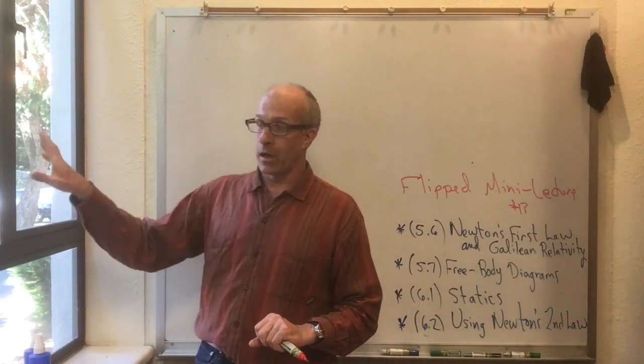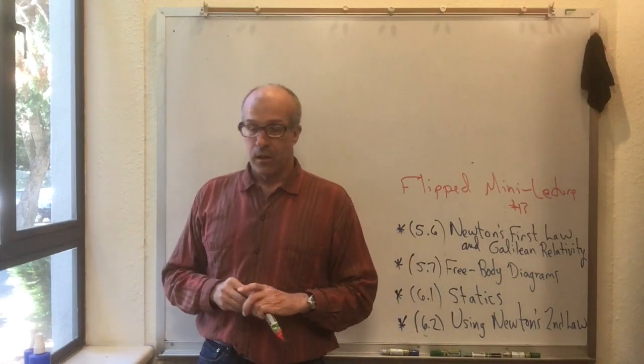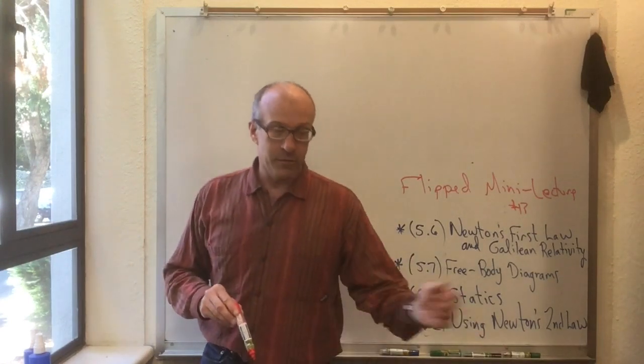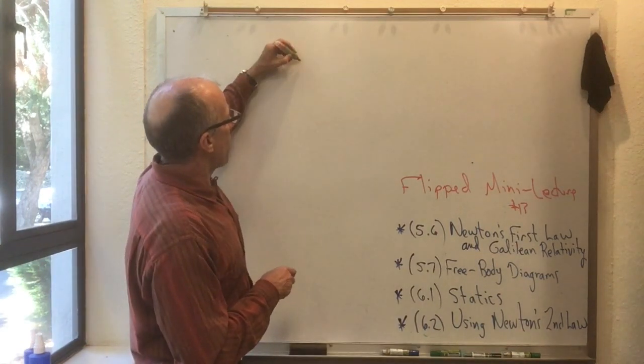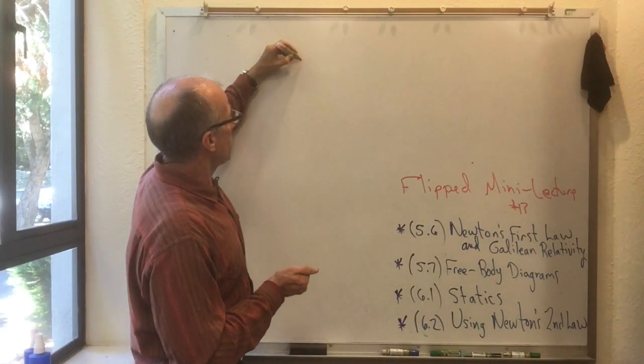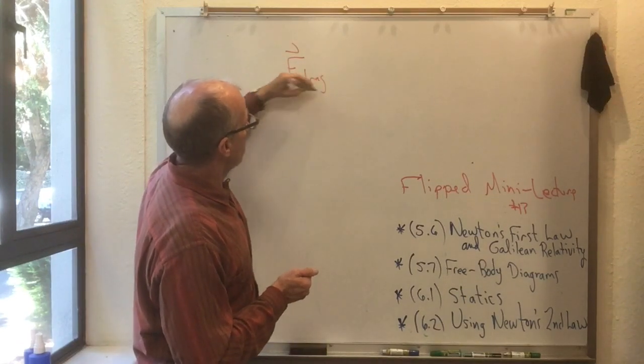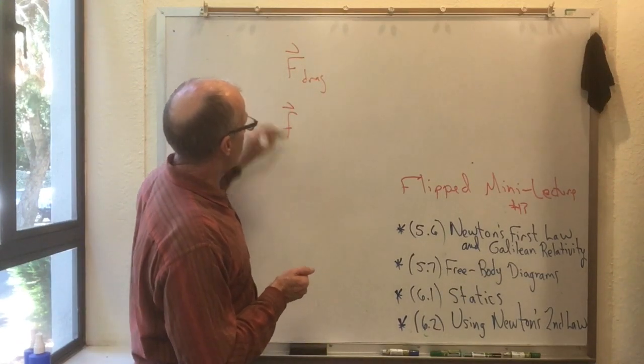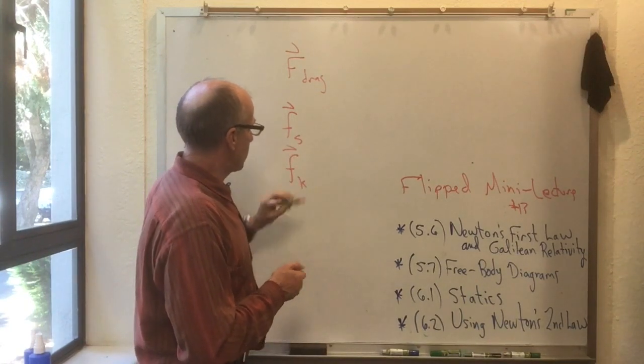But if I'm sliding something across a surface, it would be the friction against that surface. In the catalog of forces that Knight has made, we have an F drag and we have an F static against surfaces and an F kinetic against surfaces.